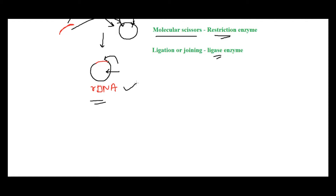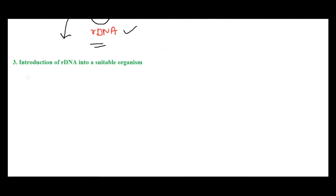Now you have the rDNA ready in the lab, but how are you going to multiply this gene of interest and get the product out of it? In order to get your product, it has to be transformed into some host or living system. So the next step is to introduce your rDNA into a suitable organism where it can multiply and produce your product of interest.